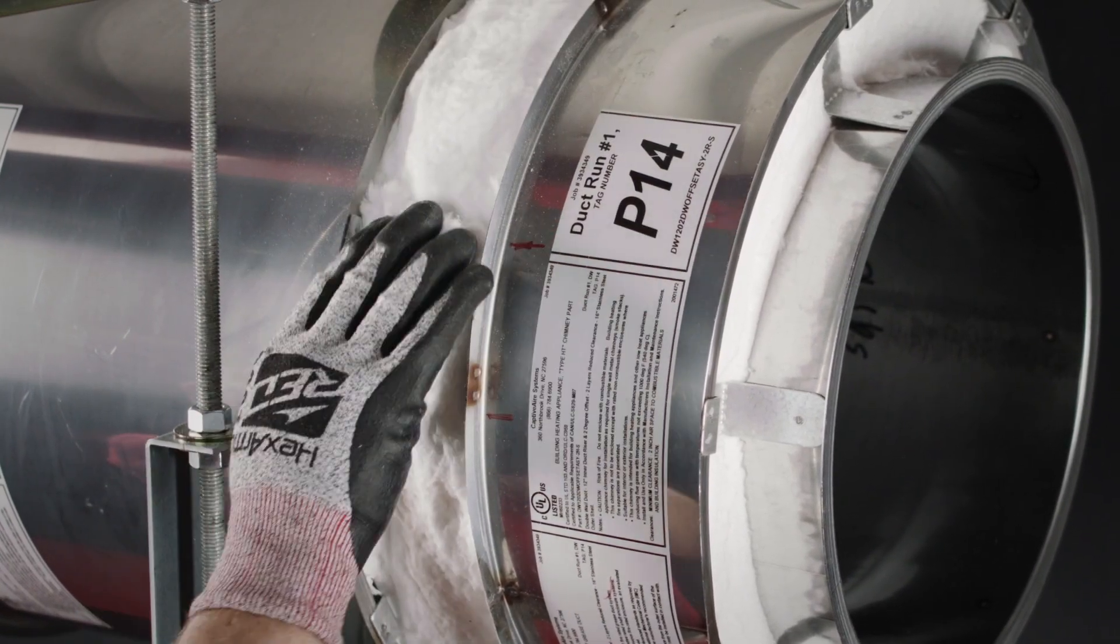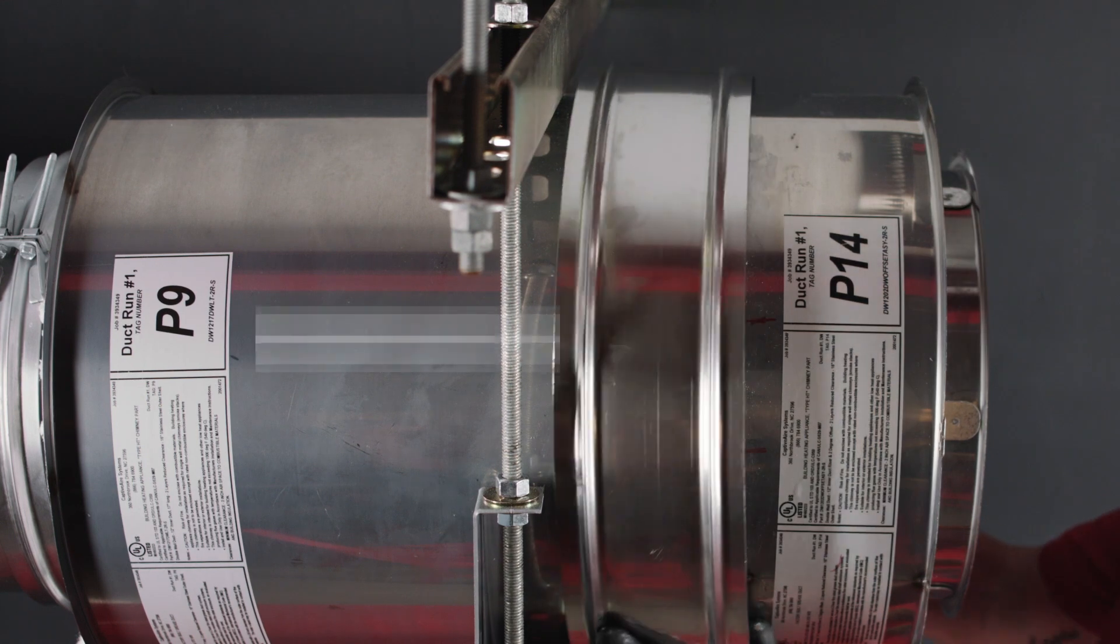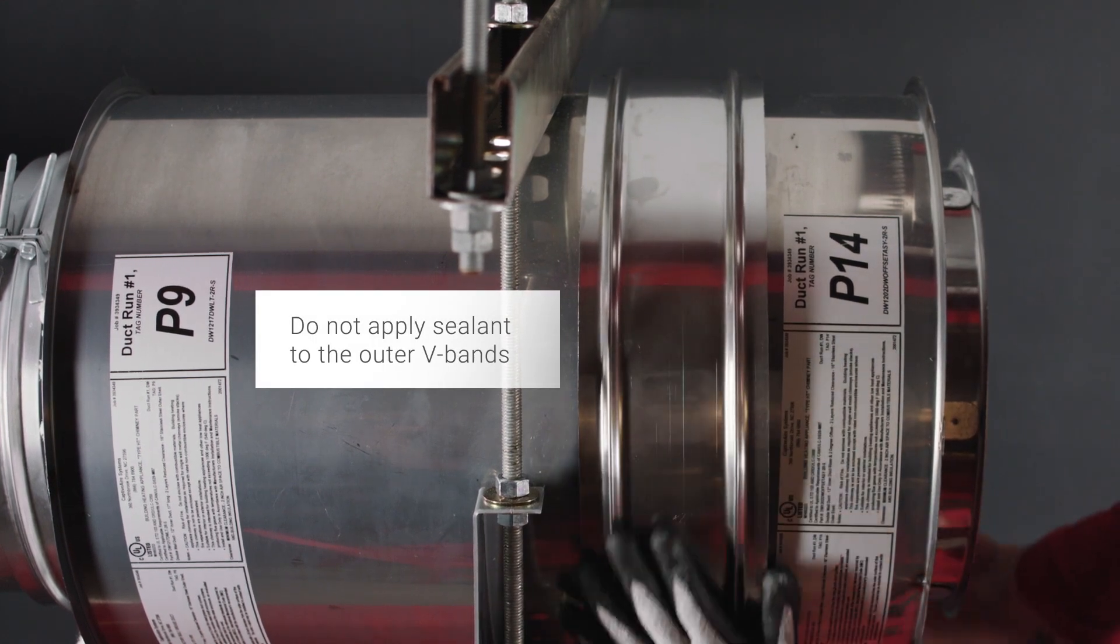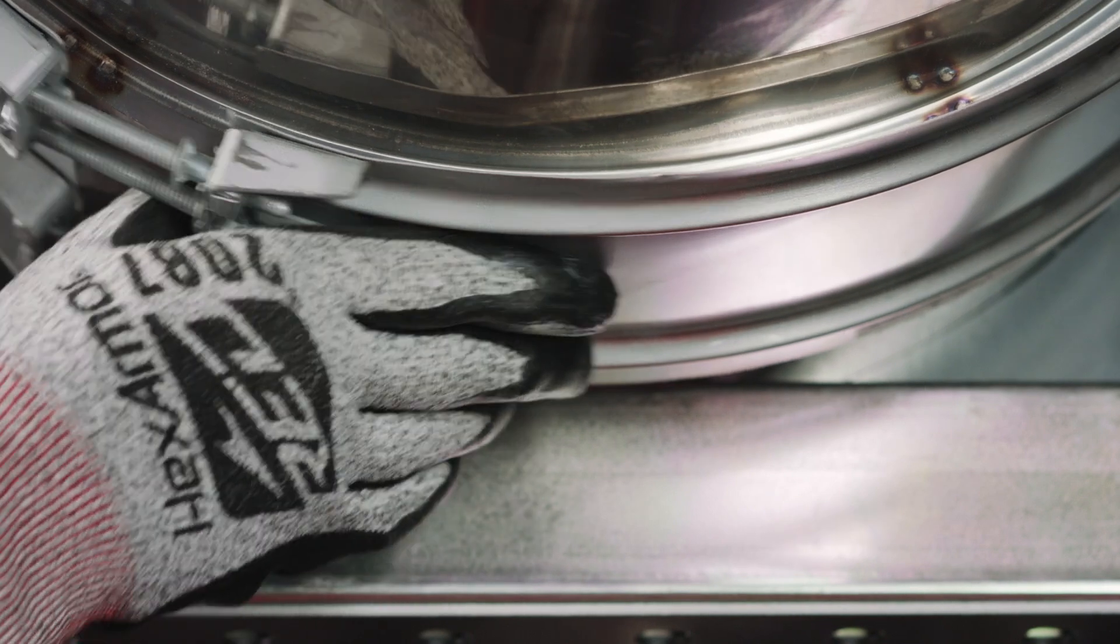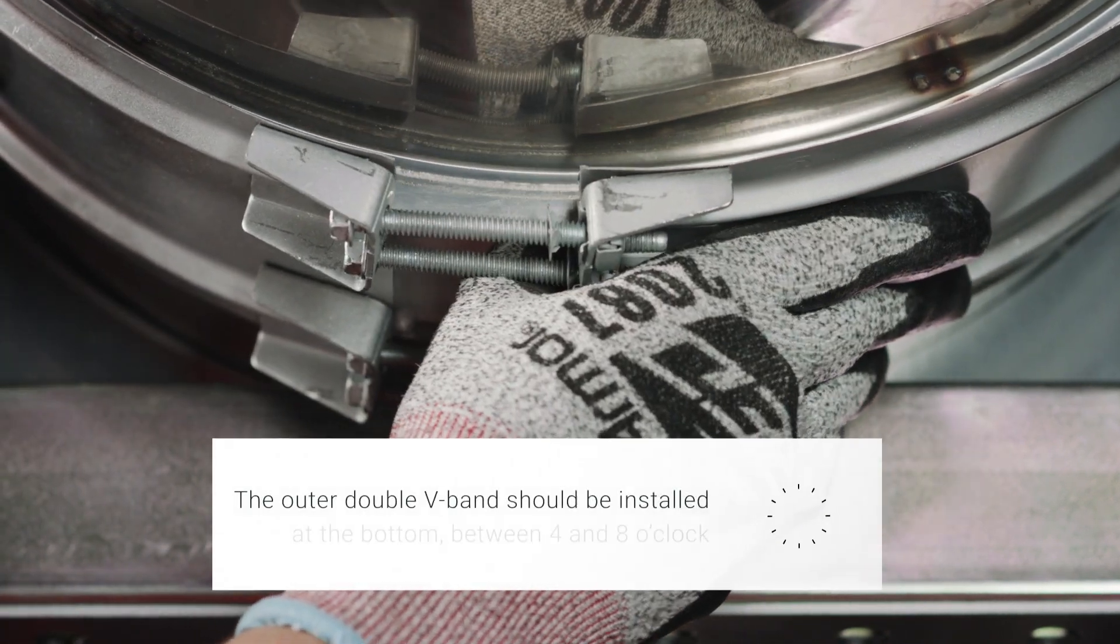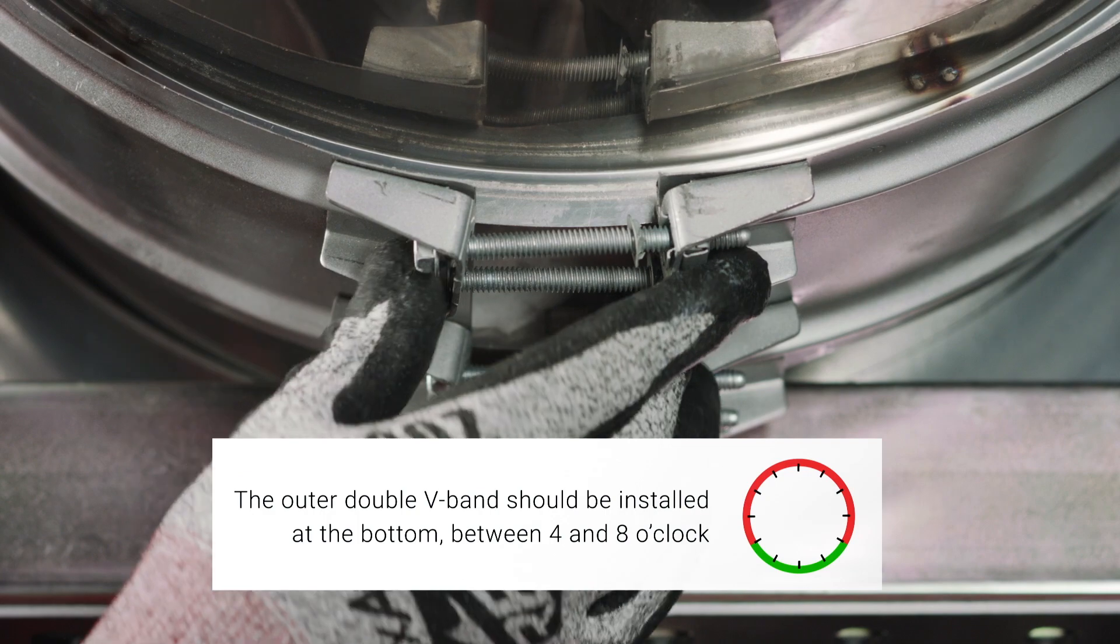Join the two flanged ends of the outer shell by installing the double V-bands. Do not install sealant. When installing ductwork outside, the double V-band must be face down in order to shed rainwater.